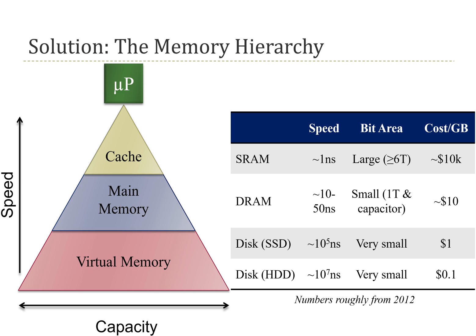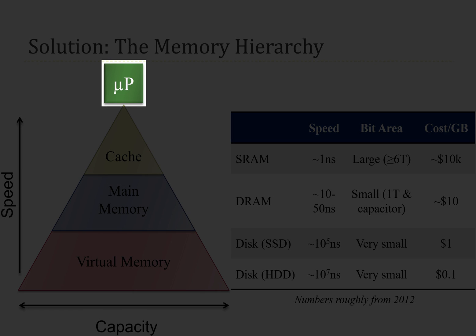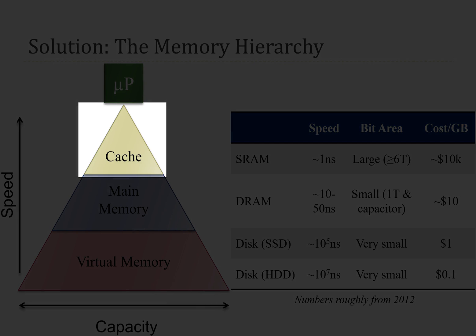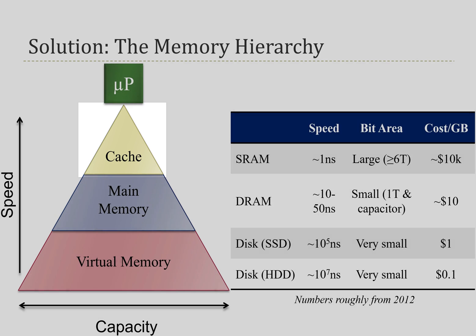To do this, we create a hierarchy of memory with the microprocessor sitting at the top. Just below that, we put some fast SRAM, which we refer to as the cache, near the microprocessor. Below that, we have some main memory composed of DRAM. And below that, we have what is referred to as virtual memory, which is usually composed of some sort of disk — whether a hard disk drive or, more recently, solid state drives.